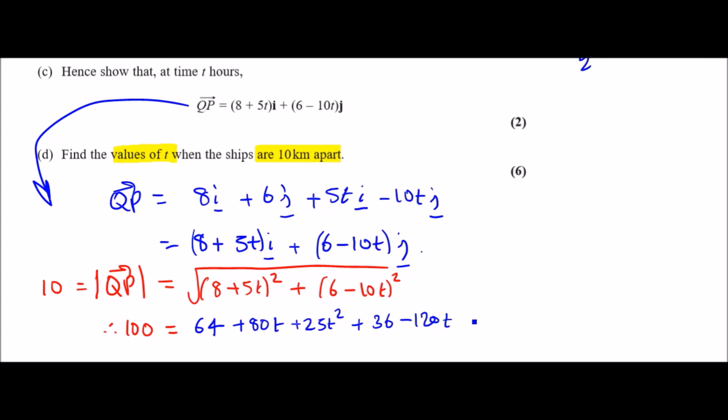Now we collect like terms. Combine the t² terms: 25t² and 100t² gives 125t². In terms of t, we've got 80 and -120, which becomes -40t. The numbers: 64 plus 36 is 100, take away 100—that's beautiful—equals zero. So we have 125t² - 40t = 0.